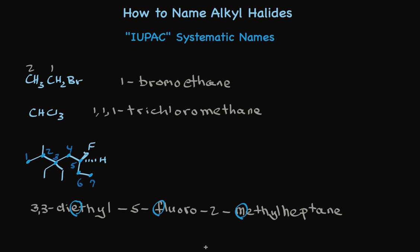With one exception: we haven't yet stated the stereochemistry, and we see there is stereochemistry on carbon five — it's a stereogenic center. We need to name it as either R or S. We assign chirality by first assigning priority to the four groups attached to the stereogenic carbon. Fluorine is heavier than carbon, so it's first priority. Hydrogen is the lightest, so it's fourth priority. One CH2 leads to a CH3 (priority 3), while the other CH2 leads to a carbon with other carbons attached (priority 2). With the fourth group oriented away from us, we go from 1 to 2 to 3 in a circle — counterclockwise — so this is S. The full name is S-3,3-diethyl-5-fluoro-2-methylheptane.